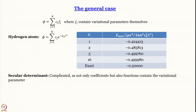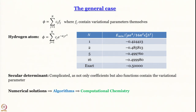One thing to understand when we include variational parameters inside the functions themselves: the secular determinant becomes complicated because the variational parameter appears within the functions too. We cannot get an analytical solution as we have been getting so far — we have to solve this numerically: put in numbers, see what solution we get, change the numbers, and so on. This requires different kinds of algorithms and opens up the field of computational chemistry.